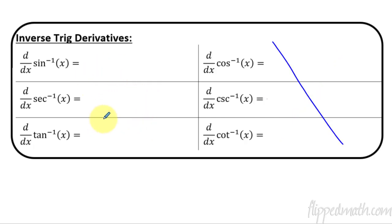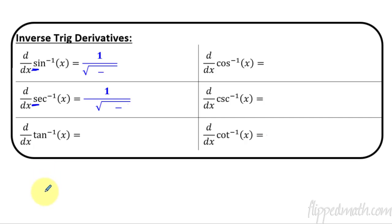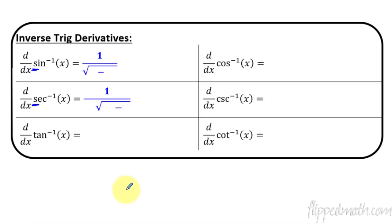Let me show you how to memorize this. First off, we're focusing on just these three. If it starts with an S, it is going to have subtraction and a square root. Again, if it starts with S — sine and secant — it has subtraction and a square root for both of them.